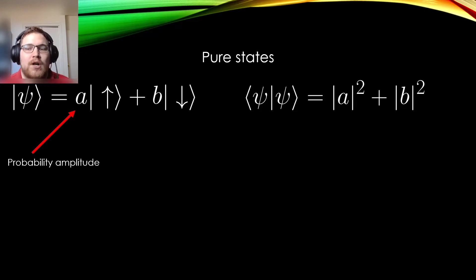If we perform an ensemble of measurements on the system, we will find that the mean or the expected value, for example, of the Pauli Z matrix, will be given by the following formula.